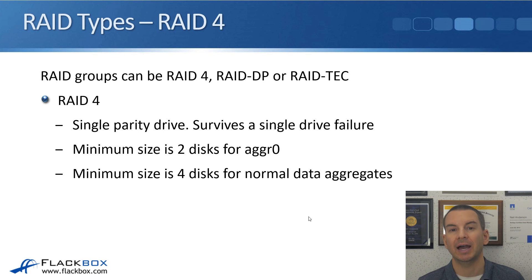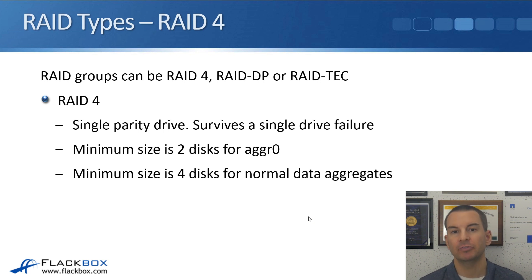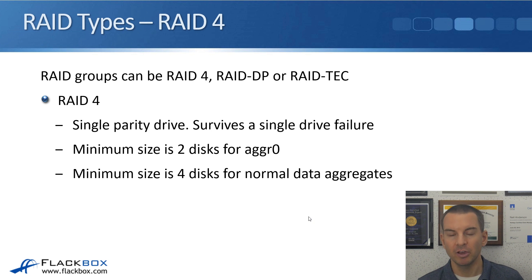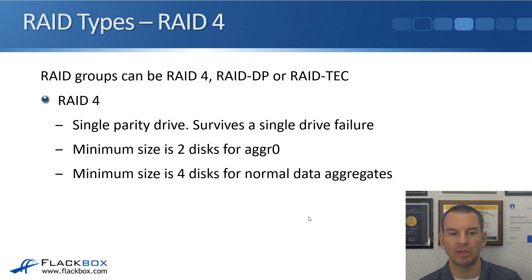The RAID groups can be RAID 4, RAID DP, or RAID TEC in ONTAP. RAID 4 uses a single parity drive, so it survives a single drive failure. But if two drives fail in that RAID group, you would lose it and have to restore from a backup. With RAID 4, the minimum size is two disks for aggregate zero, and four disks for normal data aggregates. RAID 4 is not commonly used.